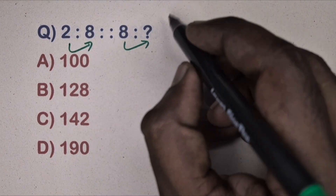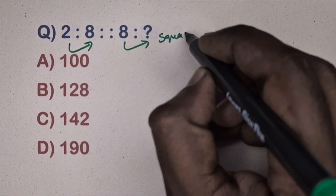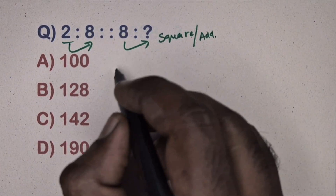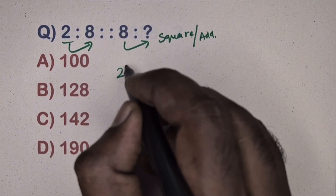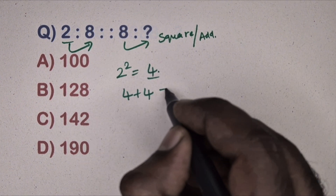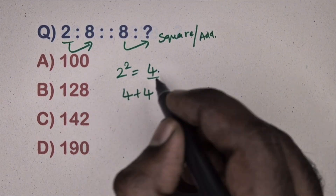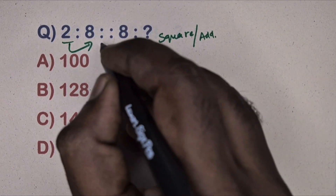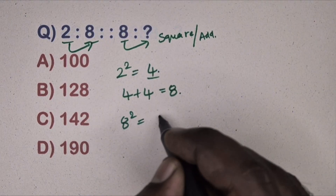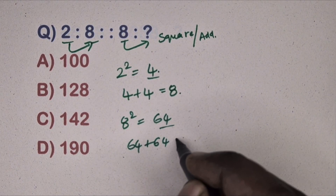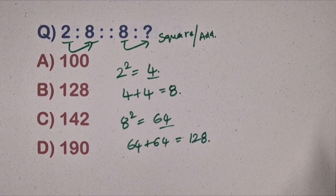Next question: 2 is related to 8, 8 is related to which number? This is the square and doubling method. Take 2: 2² = 4, double it to get 8. Same way, take 8: 8² = 64, double it to get 128. Option B is the correct answer.